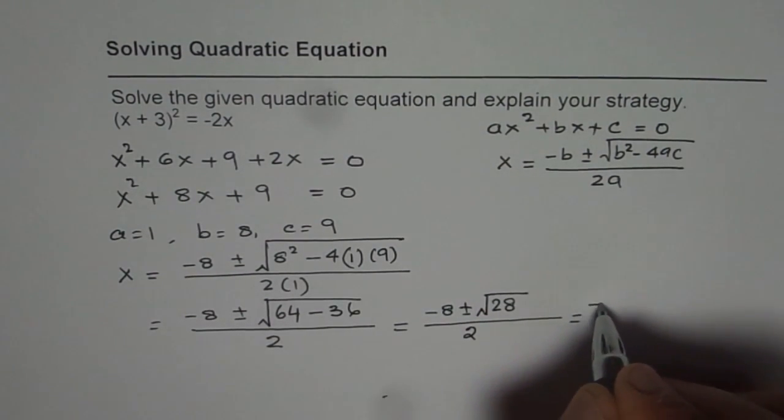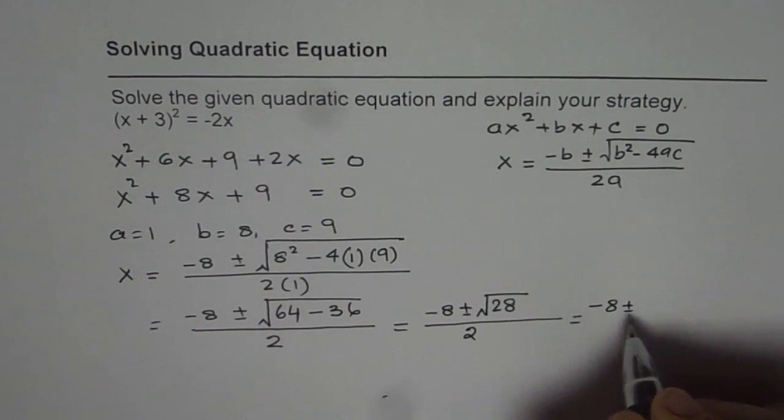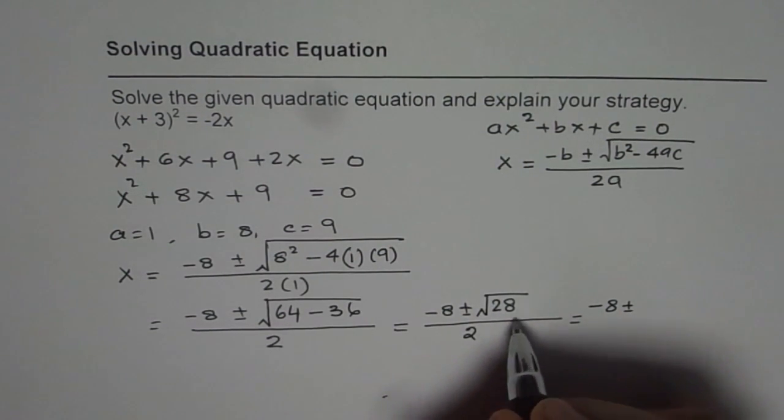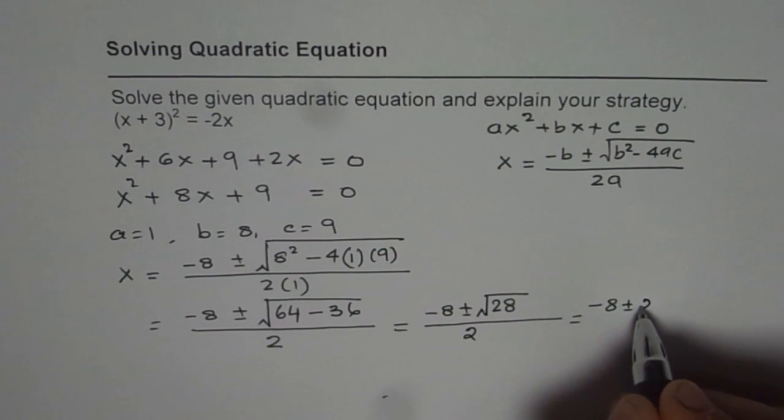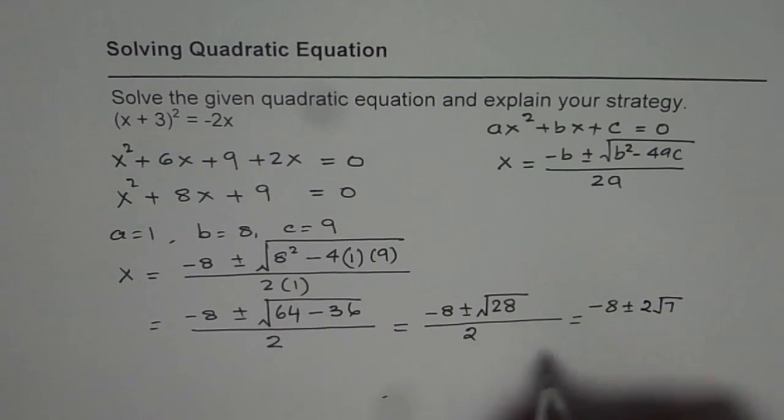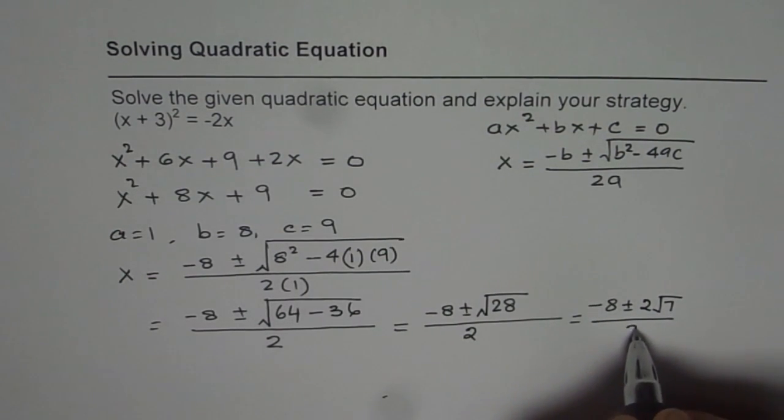So I could write this as -8 ± √(7 × 4). If I write the radical as 7 times 4, I can take 2 outside and I get √7 within, since √28 equals 2√7, divided by 2.